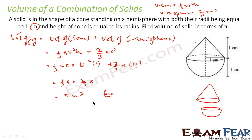Very simple. We found that this figure is composed of one cone and one hemisphere. We found the volume of the cone, found the volume of the hemisphere, and added them to get the volume of the shape.